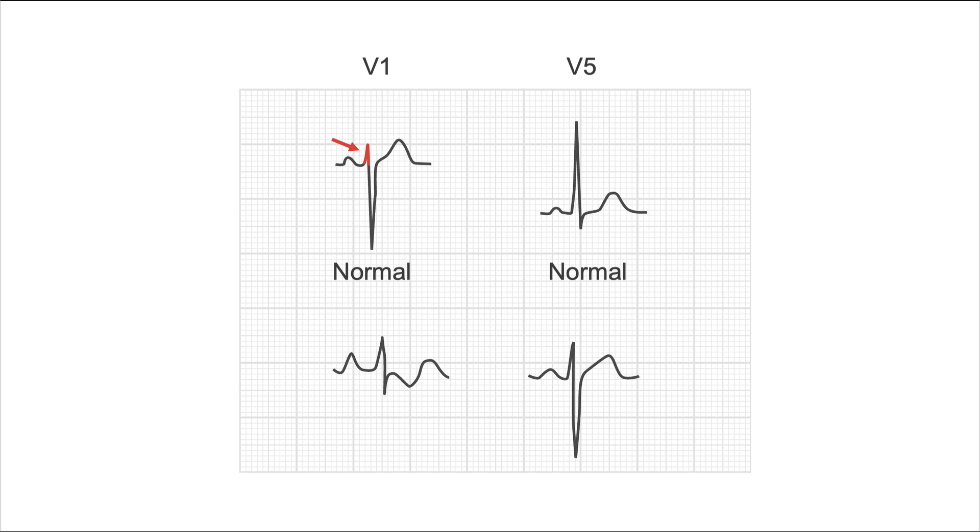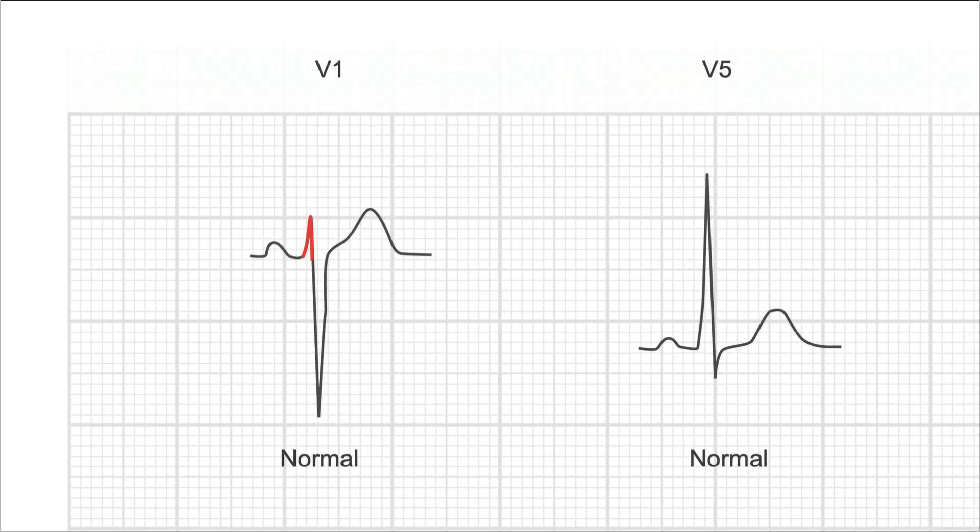Look at the R in V1 first. Is it above 0.5 millivolts? Let's count. 1, 2, 3, 4. It's 0.4 millivolts. So, RSS criteria number 1 is not positive.